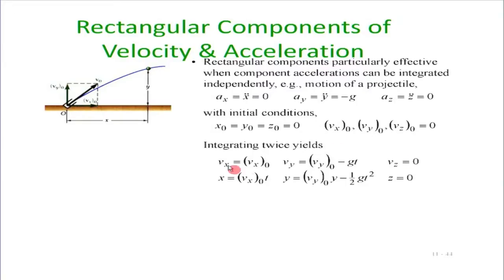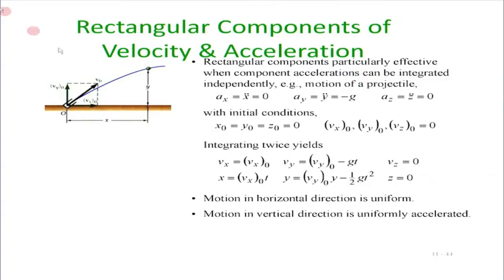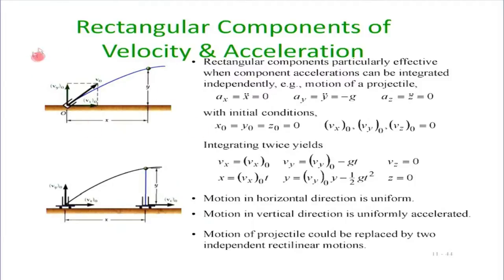Integrating twice, we get v_y = v_y0 minus g·t, and the z-motion we don't need to worry about. The x position is simply v_x0·t and y equals v_y0·t minus half·g·t². Essentially the particle has two independent rectilinear motions: one in x with no acceleration (uniform motion) and one in y with uniform acceleration of minus g. The complete motion can be broken down into these two independent rectilinear motions.